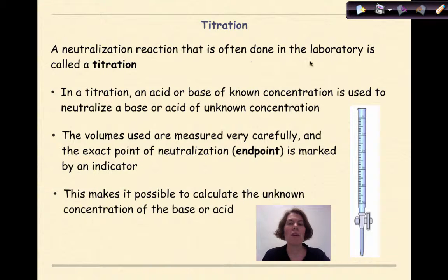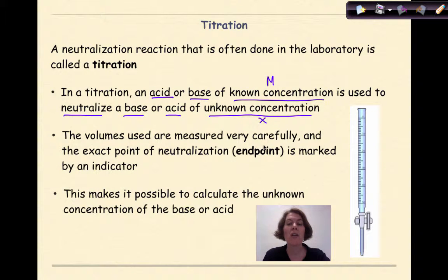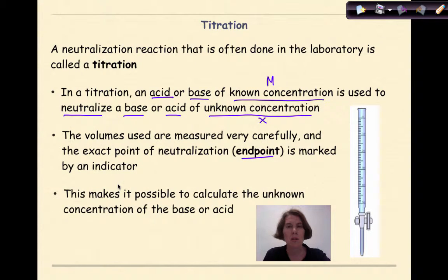A neutralization reaction that is often done in the laboratory is called a titration. In a titration, an acid or base of known concentration — in other words, known molarity — is used to neutralize a base or acid of unknown concentration. The volumes used are measured very carefully, and the exact point of neutralization, known as the endpoint, is marked by an indicator. This is where you see a color change to mark the difference between an acidic, neutral, and basic solution.